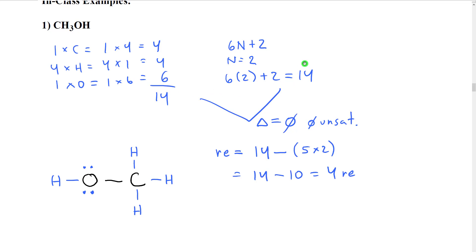Then when we compare these two numbers, so I've compared them here, our difference is zero. That means we have zero unsaturations, which means we don't have any multiple bonds, we don't have an incomplete octet, we don't have a ring.